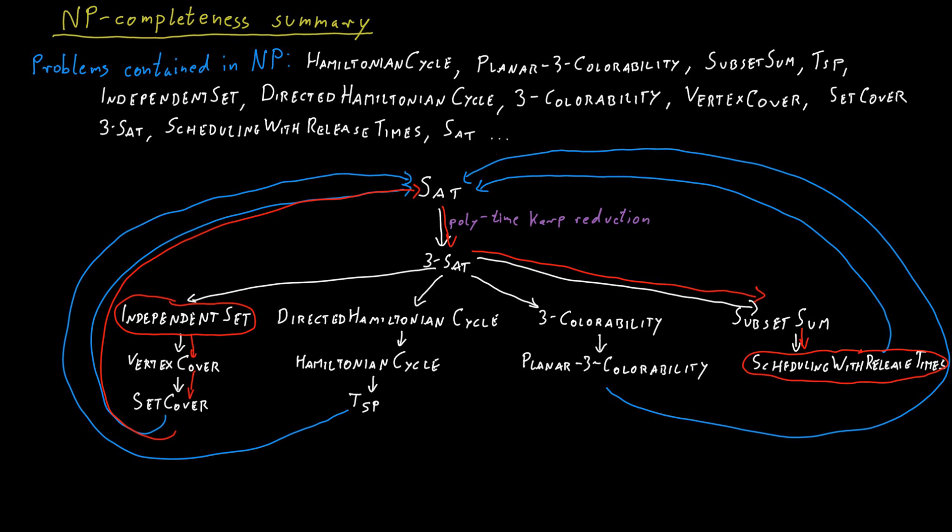So by transitivity of the reduction, independent set reduces to scheduling with release times. And it's easy to see that the opposite is also true. So in fact, all of these problems here are polynomial time equivalent.